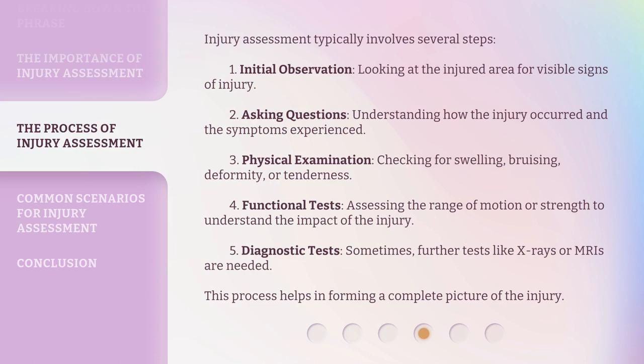Injury assessment typically involves several steps. 1. Initial observation — looking at the injured area for visible signs of injury. 2. Asking questions — understanding how the injury occurred and the symptoms experienced. 3. Physical examination — checking for swelling, bruising, deformity, or tenderness. 4. Functional tests — assessing the range of motion or strength to understand the impact of the injury. 5. Diagnostic tests — sometimes further tests like X-rays or MRIs are needed. This process helps in forming a complete picture of the injury.